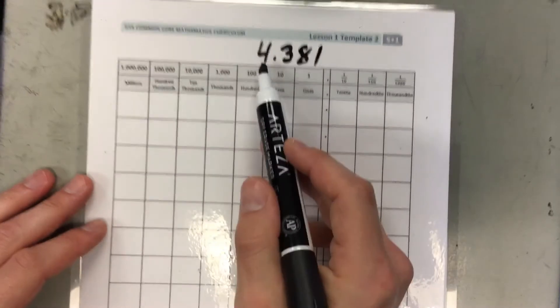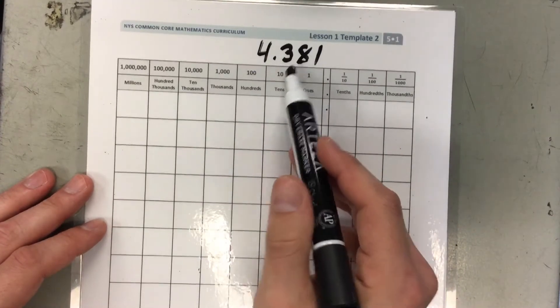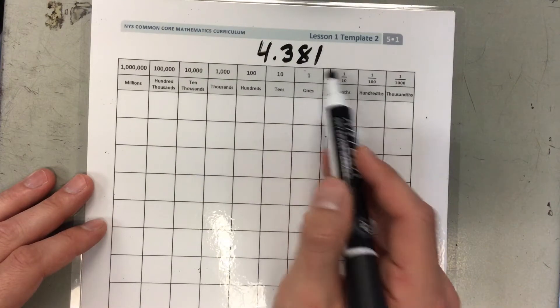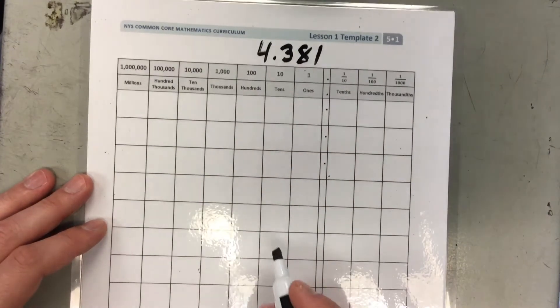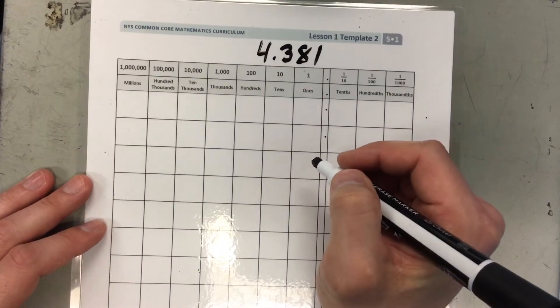So remember, you've got your whole number, 4, and then for the decimal, and. And then you read this number, 381, and that 1 is in the thousandths place. So that's where it gets its name, 4 and 381 thousandths.